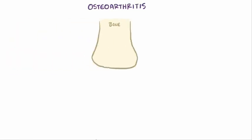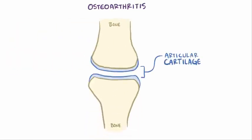A healthy joint consists of two bones, each with its own layer of articular cartilage, which is a type of connective tissue that allows the two bones to glide against each other essentially without friction.